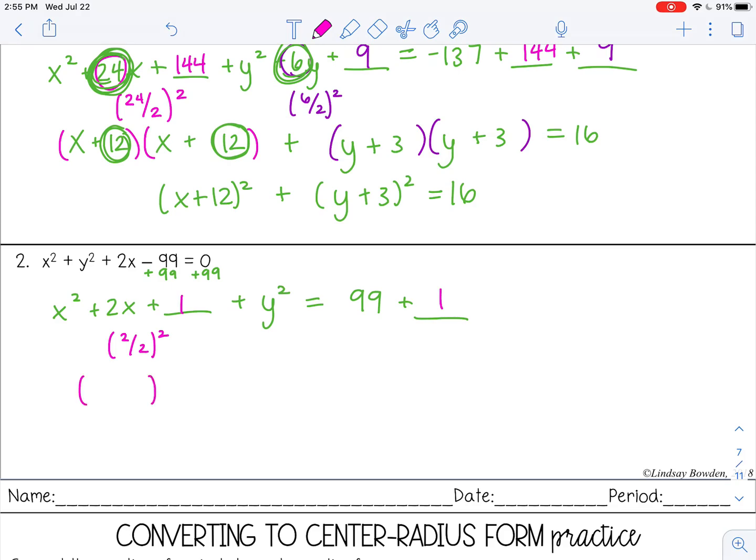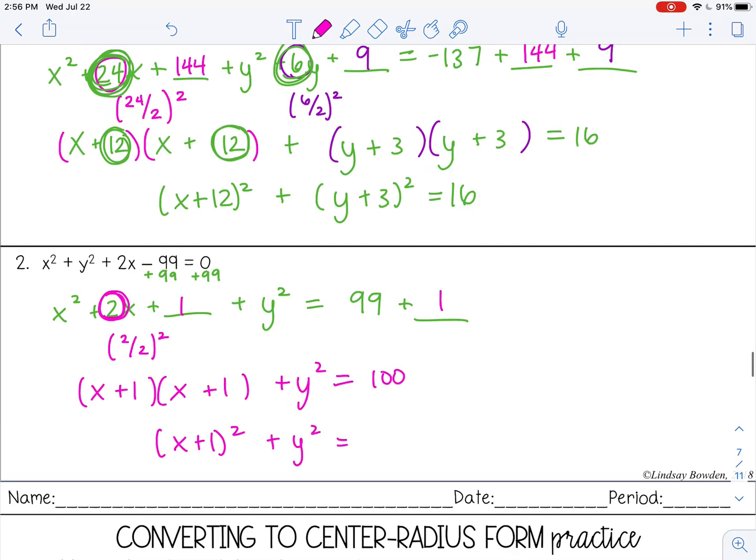When we're factoring, we're looking for two numbers that multiply to give me 1 but add to give me 2. We know it has to be the same number. Remember, you can just take half of your b term, which is 1. Let's bring everything else down. Add 99 plus 1, that's 100. So my final answer would be x plus 1 squared plus y squared equals 100.